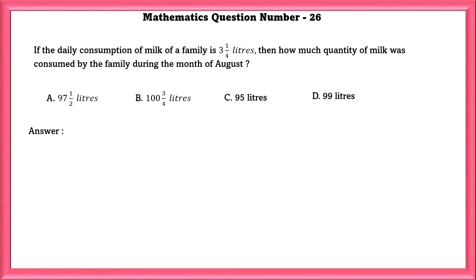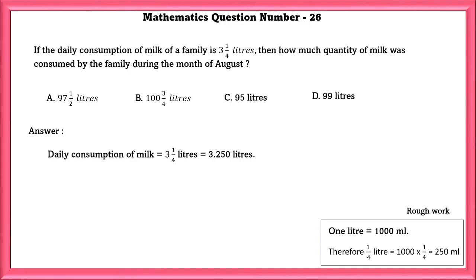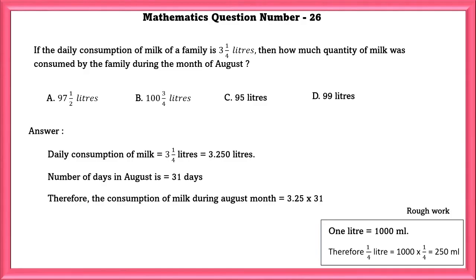Mathematics Question Number 26. If the daily consumption of milk of a family is 3 1 by 4 liters, then how much quantity of milk was consumed by the family during the month of August? The daily consumption of milk is 3.25 liters. Number of days in August is 31 days. Therefore, the consumption of milk during August month is 3.25 into 31, which is equal to 100.75 liters, that is equal to 103 by 4 liters.